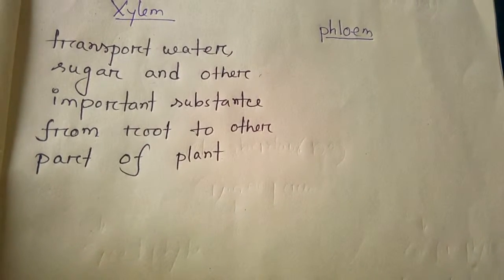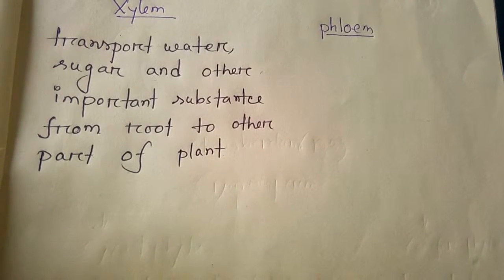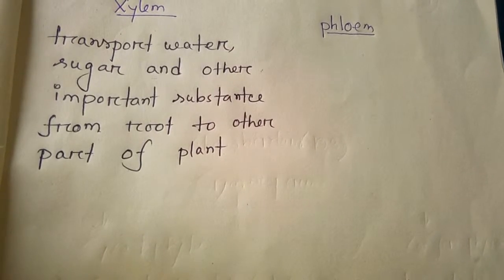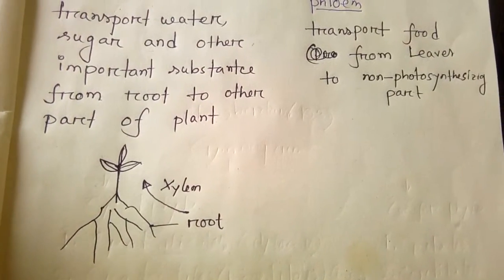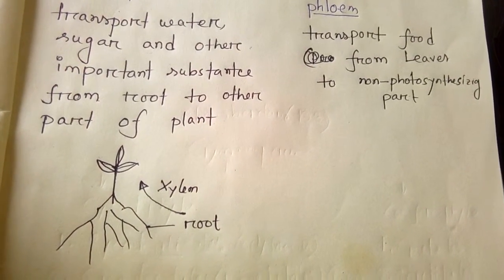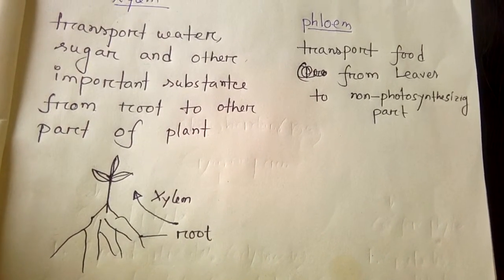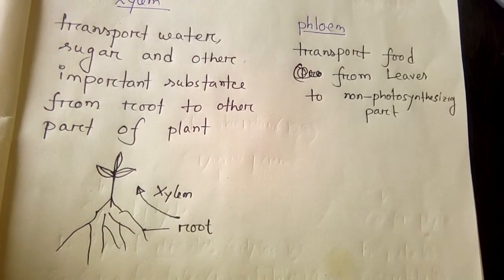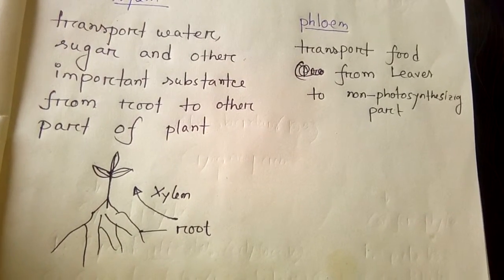Xylem transports water, sugar, and other important substances from root to other parts of the plant. And phloem transports food produced from photosynthesis from leaf to non-photosynthesizing parts of a plant.